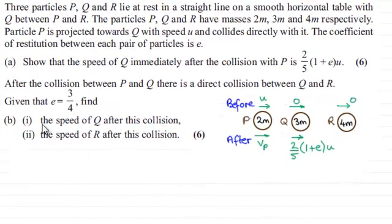Hi there. Now before we start part B, I'm just going to quickly remind you what we did in part A. We had the three particles P, Q and R of masses 2m, 3m and 4m. Q and R were at rest and P was projected towards Q with a speed of u. And then after the impact we had to work out the speed of Q. We had to show that it was 2/5(1+E)u.